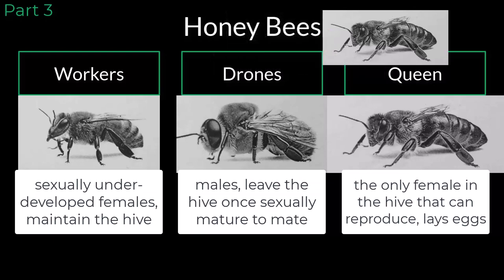She typically will travel several miles looking for a mate to avoid mating with drones from her own hive. During each mating flight, the queen will typically mate with seven to 15 different male drones. After the mating flight is complete, the queen will return to the hive and begin laying eggs. Some of these eggs will develop into female worker bees and some eggs will develop into male drones.